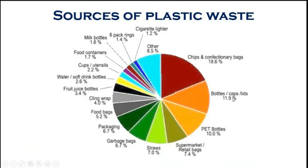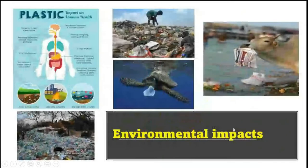Looking at the various sources of plastic waste: 11.9 percent comes from bottle caps, lids, and chip wrappers; 18.6 percent from PET bottles, supermarket bags, straws, garbage bags, packaging, food bags, and juice or soft drink bottles. Cigarette lighters also show a significant share. The highest number comes from chips and confectionery bags at around 18 percent, followed by bottles and PET bottles at 11 percent.